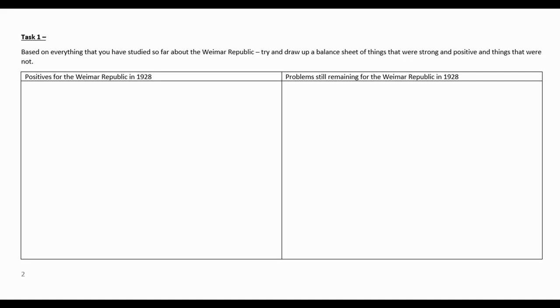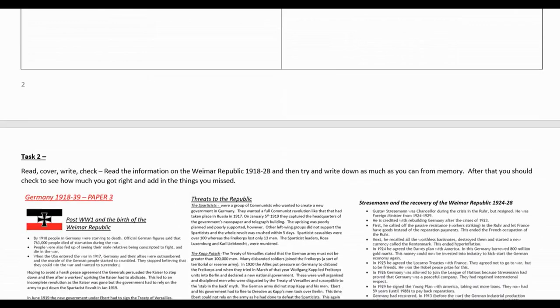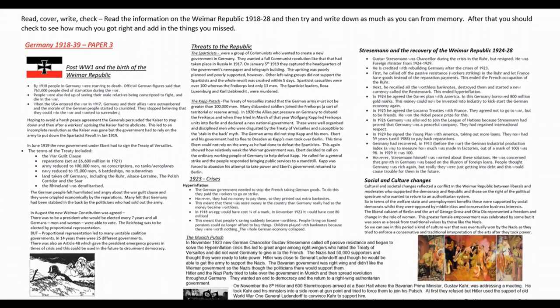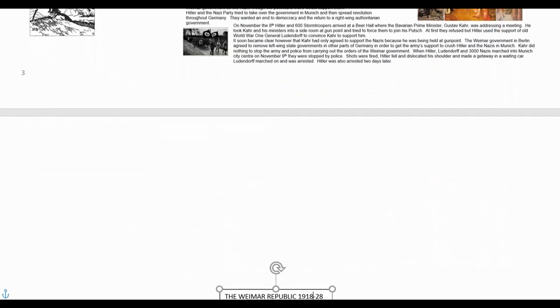What you're going to do now is move on and do a little bit of revision of the Weimar Republic 1918 to 1928. You've got a revision page on the third page of your lesson notes template. You're going to read this, you're going to cover it over, and you're going to write down as much as you can remember about the Weimar Republic in the period from 1918 to 1928. Then you're going to go back and check and see what you got right.